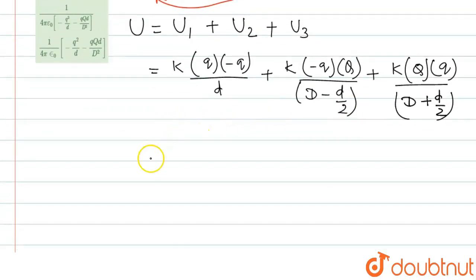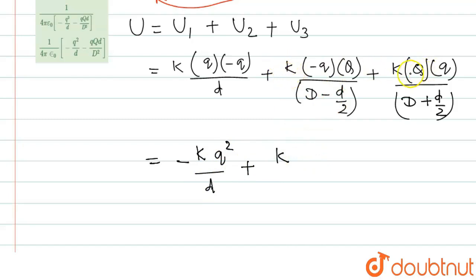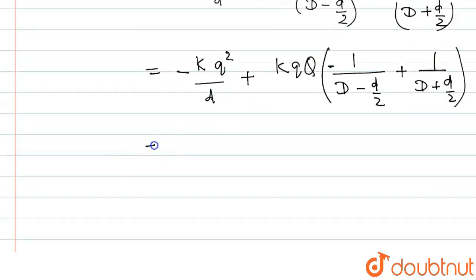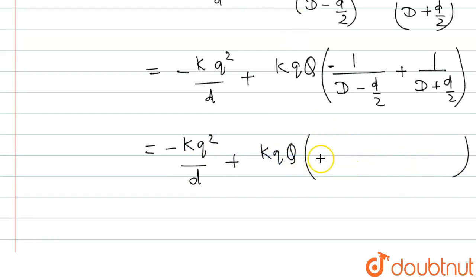Now solving further: this will be -kq²/d. Then taking k·q·Q common, inside the bracket it will be: 1 divided by (d minus d/2) plus 1 divided by (d minus d/2), plus 1 divided by (D plus d/2). We can write -kq²/d plus k·q·Q inside the bracket. If we take the LCM, this will be d² minus d²/4.